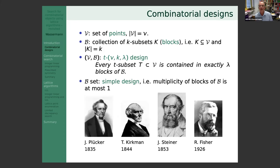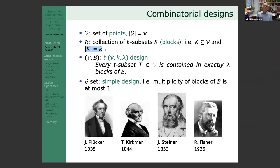Combinatorial designs: you have a set V of points with cardinality v, and you search for a collection of k-subsets — where each subset has cardinality k. This collection together with the set of points is called a t-(v, k, λ) design if every t-subset of the points is contained in exactly λ blocks of B.